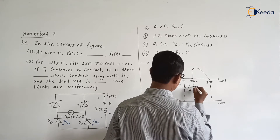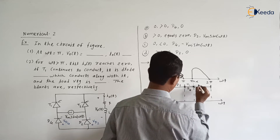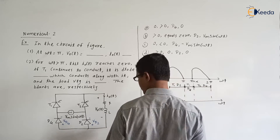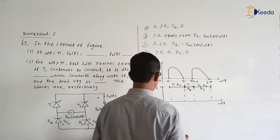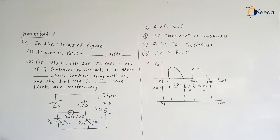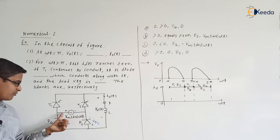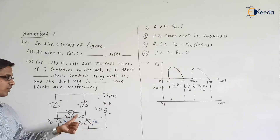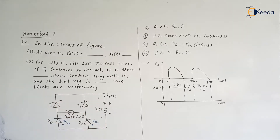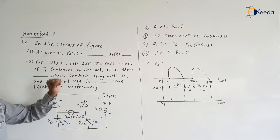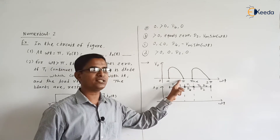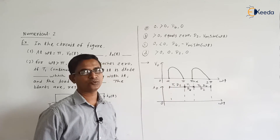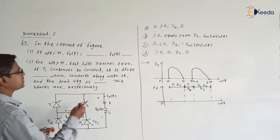During the positive half cycle, Vs is Vm sin omega t — plus at top, minus at bottom. At alpha, thyristor T1 is turned on, so current flows from T1 through the load, through D2, and back to Vs — the inductor goes on storing energy. At omega t equal to pi, what is V0? It is zero. So V0 is equal to zero at omega t equal to pi.